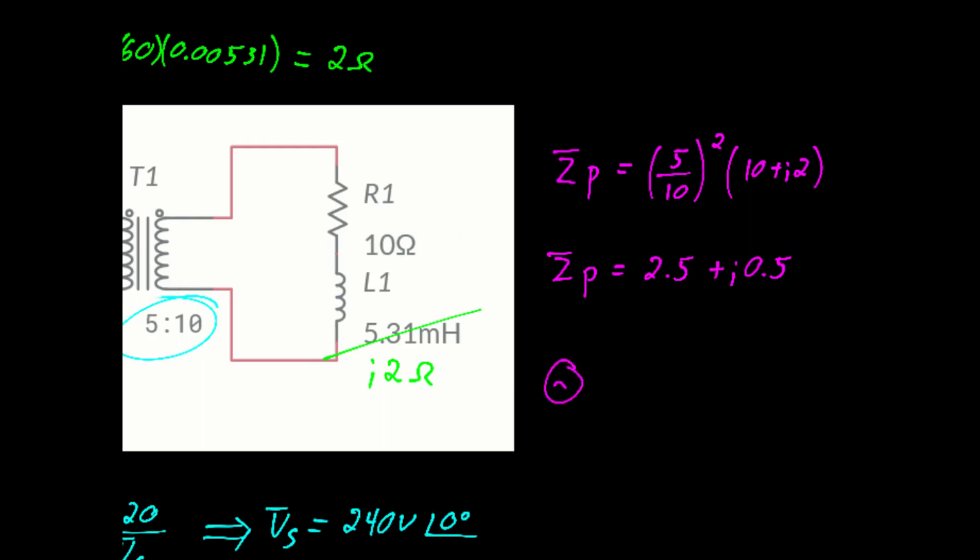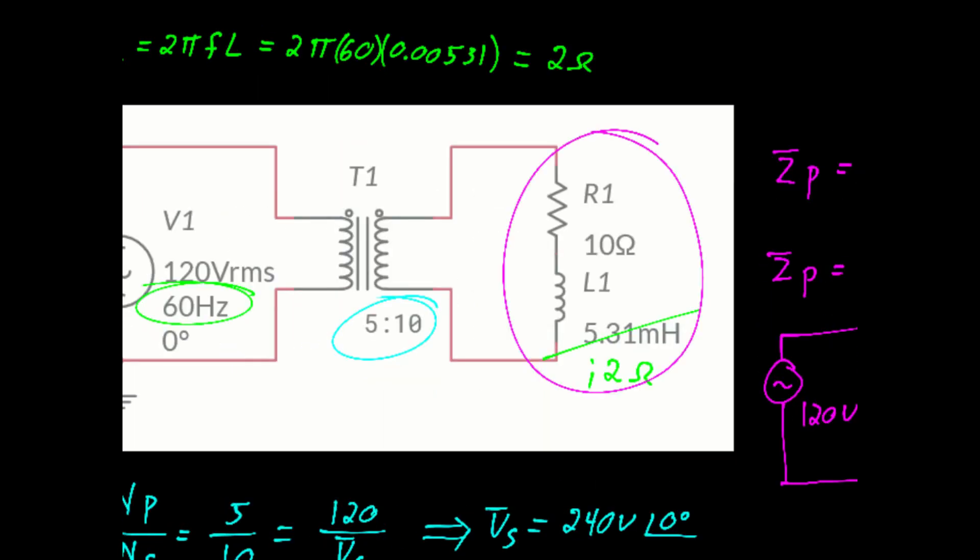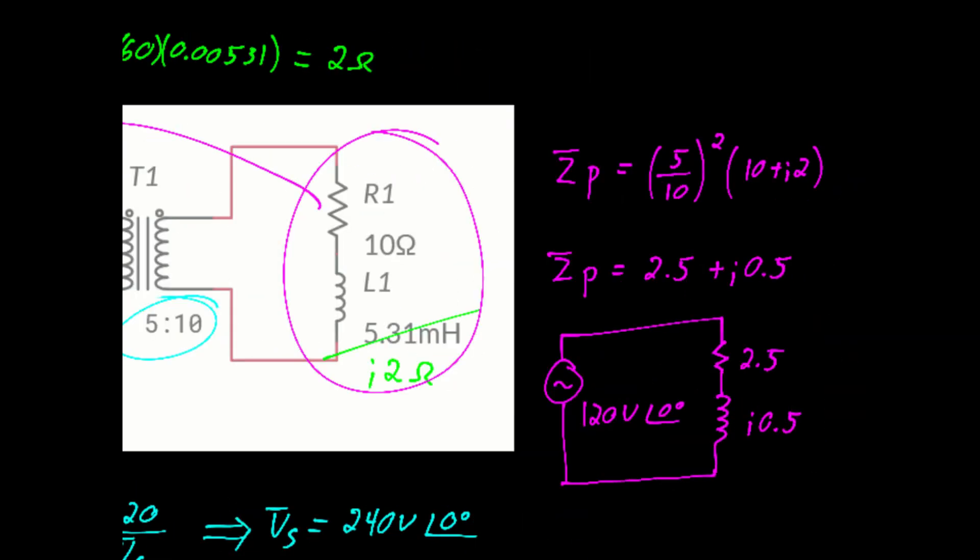If we were to redraw that, we would say that 2.5 plus j0.5 is connected directly across our 120 volt source. It's an equivalent circuit. Again, what we've done is we've taken the load that's on the secondary, and we have reflected it across the transformer over to the primary.